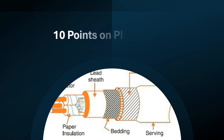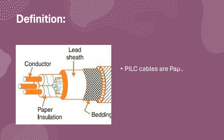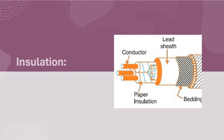10 points on PILC cables definition: PILC cables are paper insulated lead covered cables used for medium voltage underground power distribution insulation.